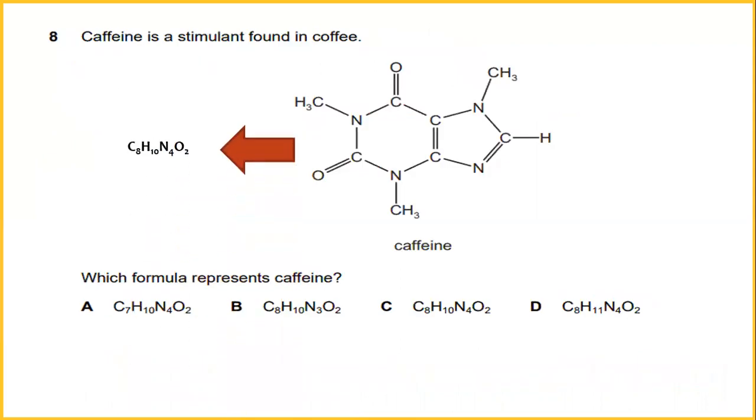Caffeine is a stimulant found in coffee. If you count here the elements, it will end up C8, H10, N4, O2. The answer would be C.